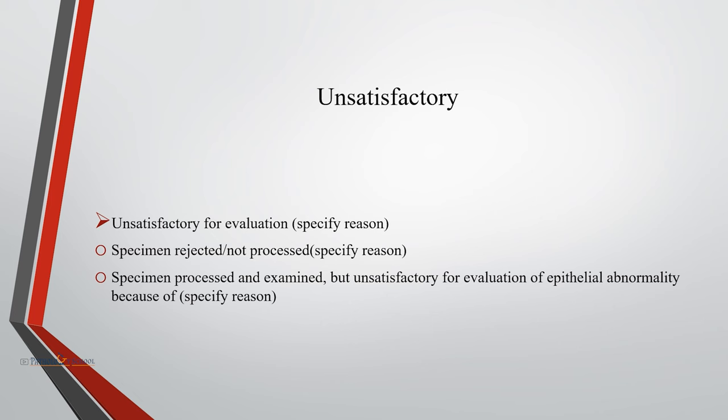A specimen is called unsatisfactory for evaluation when we specify its reason — either if the specimen is rejected or not processed, such as when a specimen is not labeled or there is a broken slide, or if the specimen is processed and examined but unsatisfactory for evaluation of epithelial abnormality because of obscuring factors such as presence of blood, inflammatory cells, mucus, or lubricants.